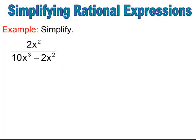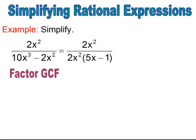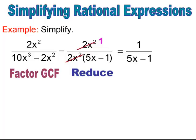In this next example, you want to factor first. In the numerator, I don't have to factor — it's a monomial. But in the denominator, I need to factor out the greatest common factor, which is 2x squared, and what's left is 5x minus 1. Now that it's factored, I can reduce: the 2x squared cancels, and I'm left with 1 over 5x minus 1.